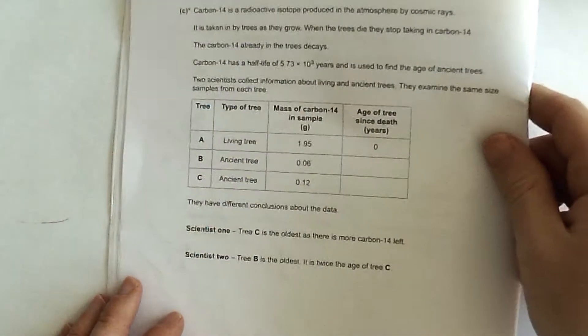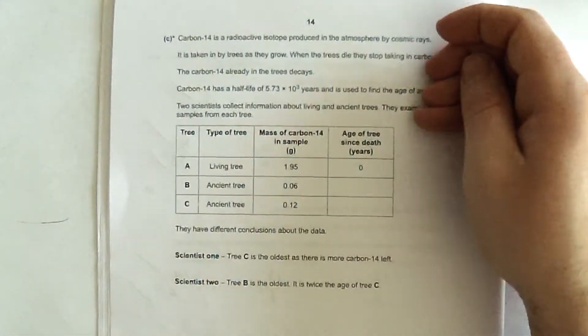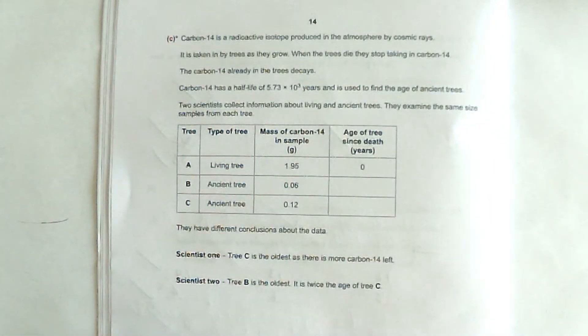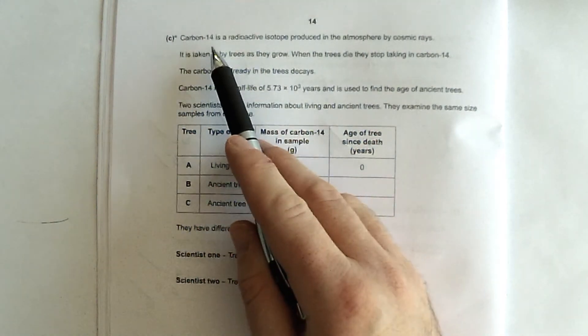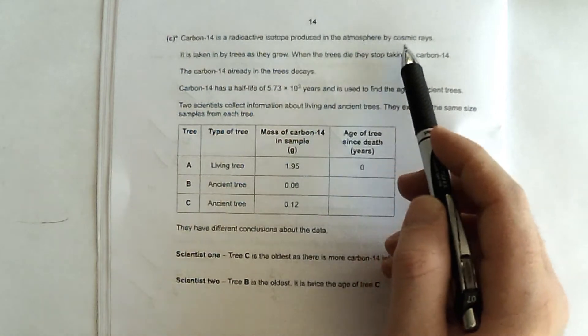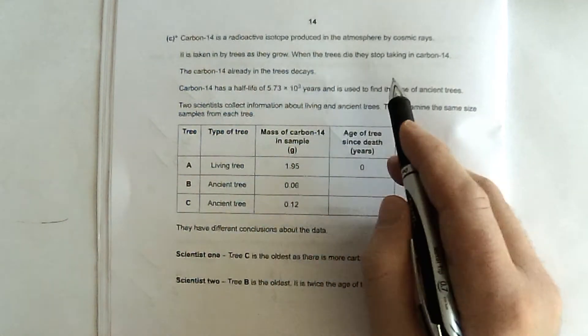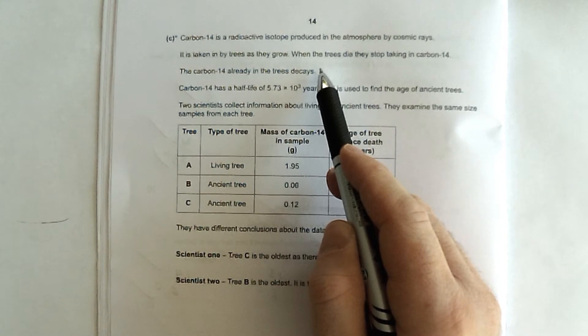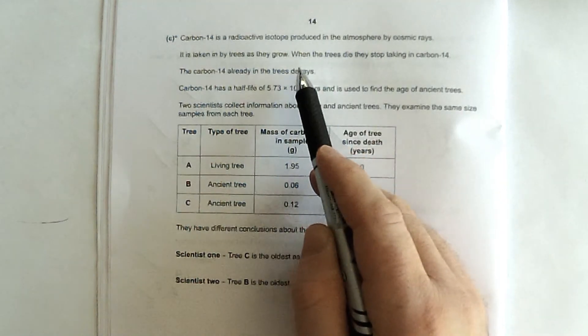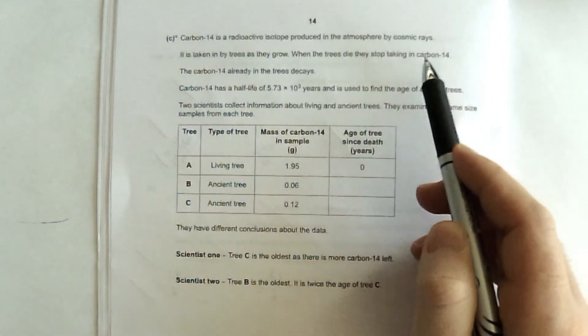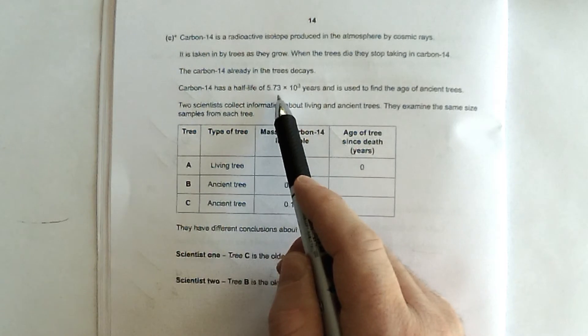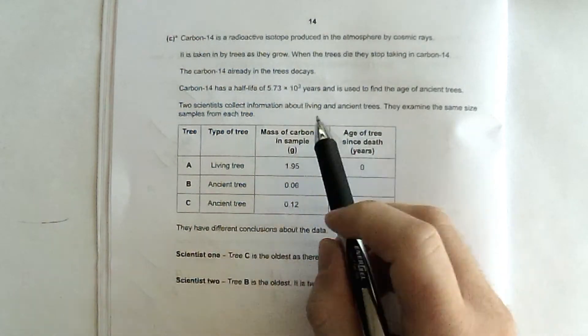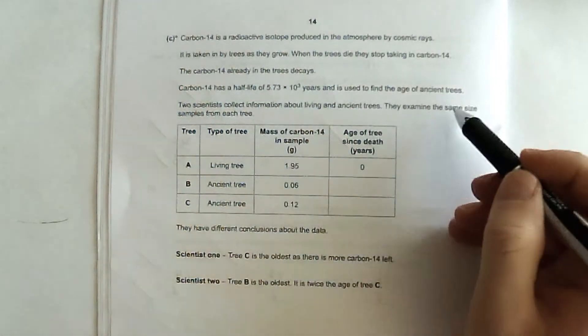Next question here. And notice the little asterisk tells us it's a level of response marked question. And so there is space to write and it's worth 6 marks on the other page. So let's think about what we're going to write as we read it, and then we'll go ahead and do the writing. Carbon-14 is a radioactive isotope produced in the atmosphere by cosmic rays. It's taken in by trees as they grow. When trees die, they stop taking in carbon-14.